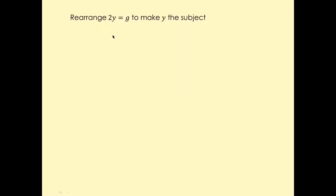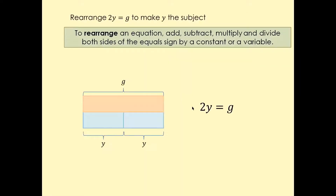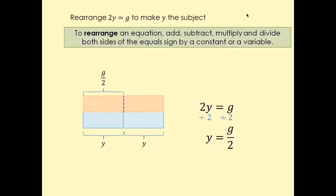y equals 2g. So the best way to do this is simply divide by two on both sides. So the two and two are going to cancel, and y is going to be g over two.